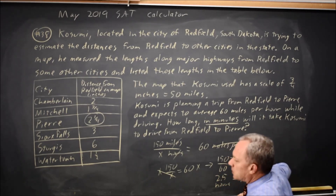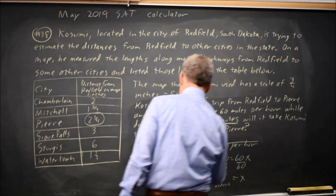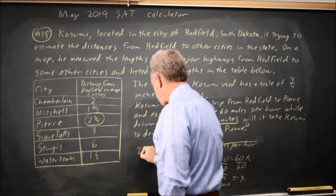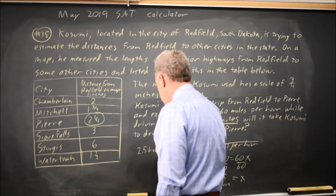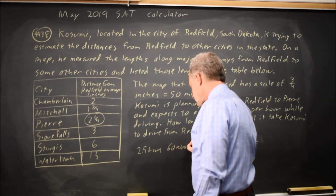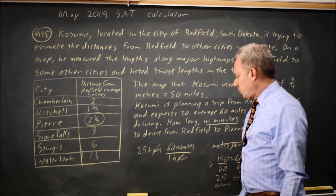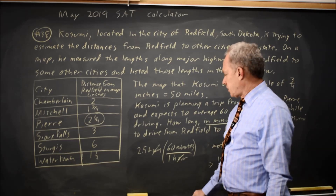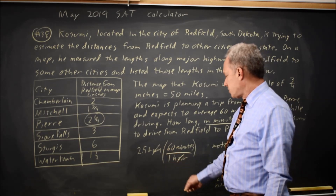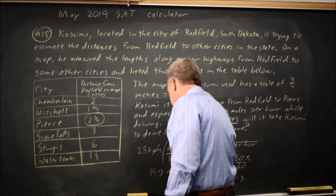But I want minutes. And 2.5 hours — to convert hours to minutes: 60 minutes equals 1 hour. And the hours will cancel. I put 60 over 1 hour because that equals 1, and then the hours cancel, which leaves me with 60 times 2.5 in minutes, which is 150 minutes.